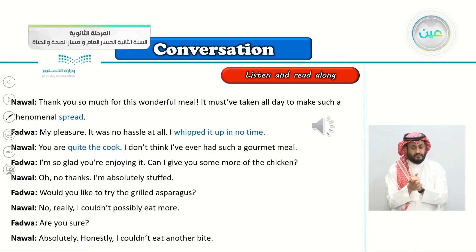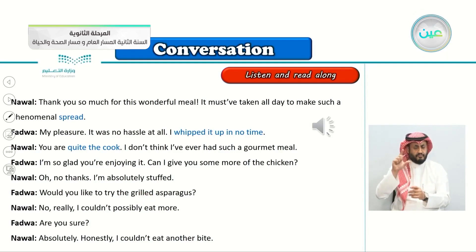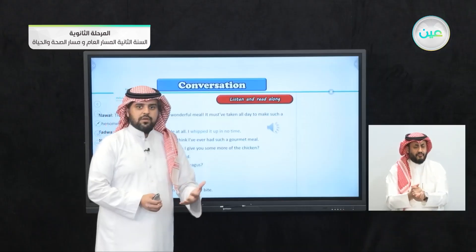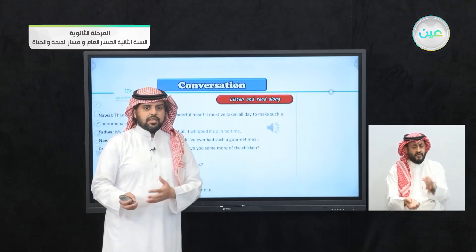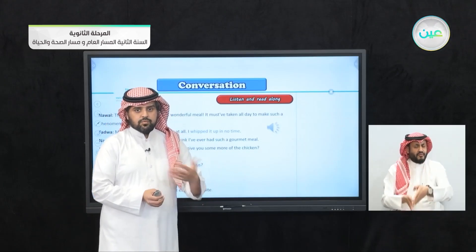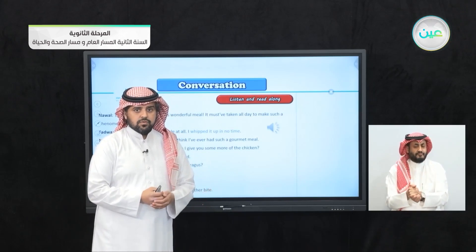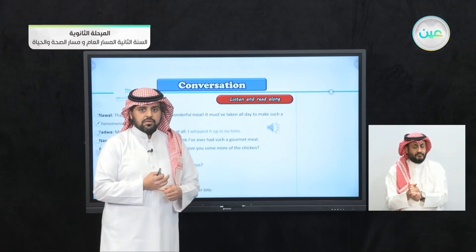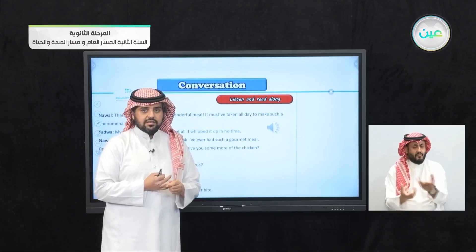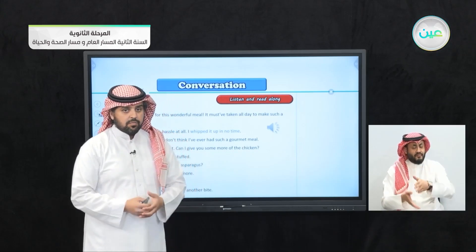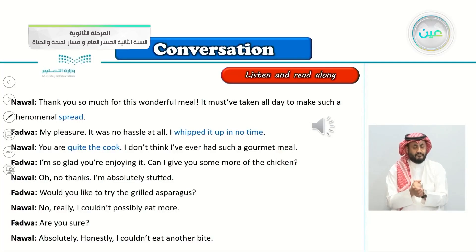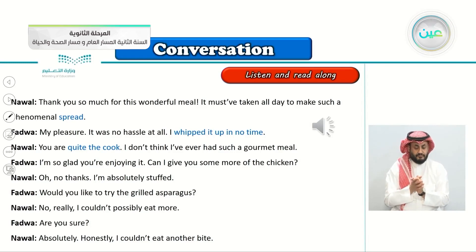'Would you like to try the grilled asparagus?' Grilled — this is one way of cooking, to grill something. Can you think of another way? There is more than one way for cooking: to barbecue, to boil, and more. Here we have grilled asparagus. 'No, really. I couldn't possibly eat more. Are you sure? Absolutely, honestly. I couldn't eat another bite.'